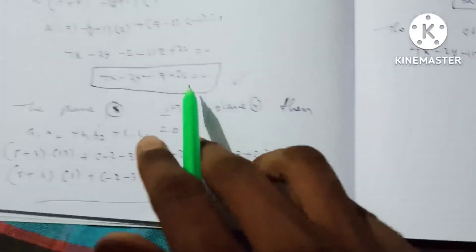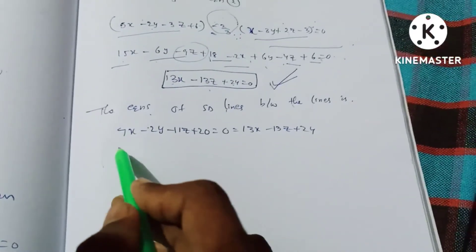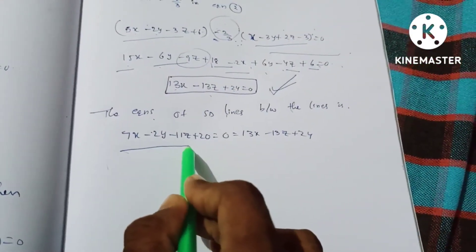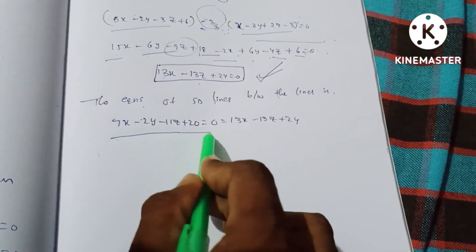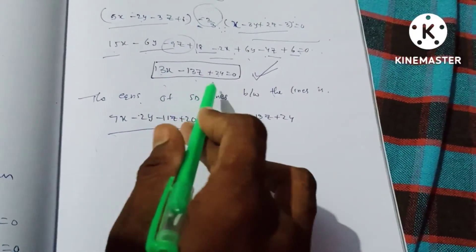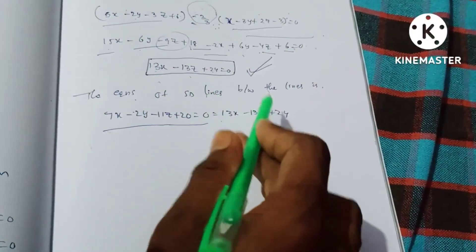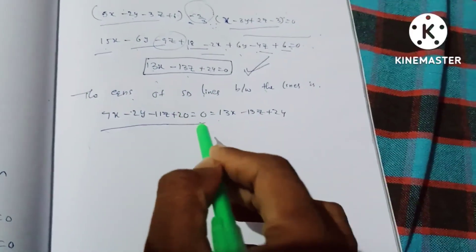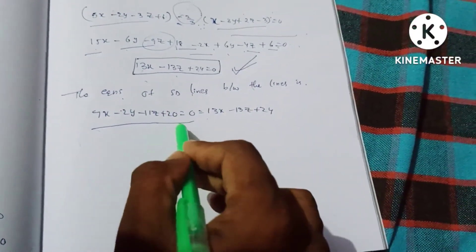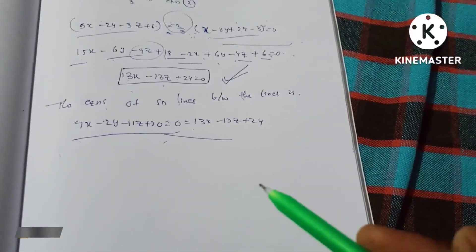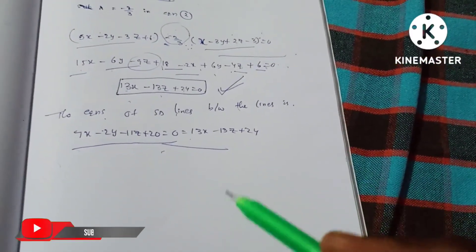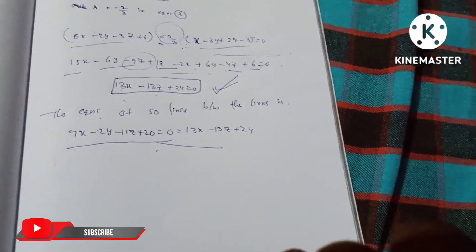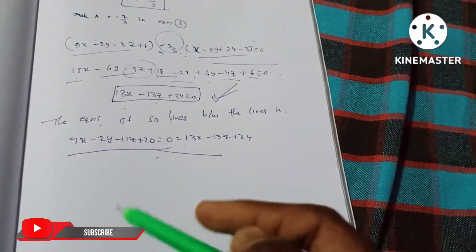Simplifying: 13x - 13z + 24 = 0. If you found this video helpful, please like and share the video and subscribe to our channel.